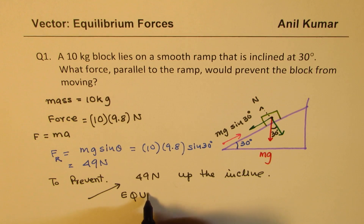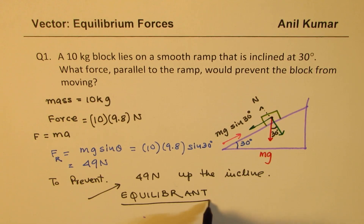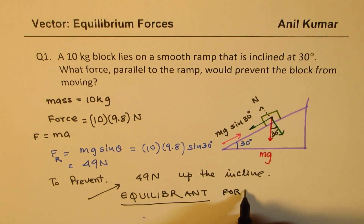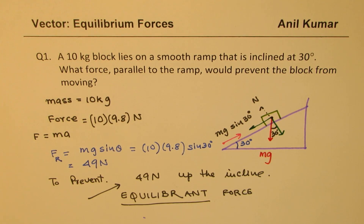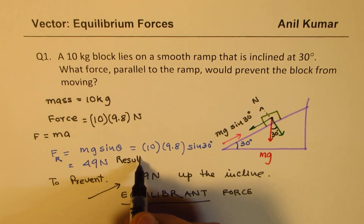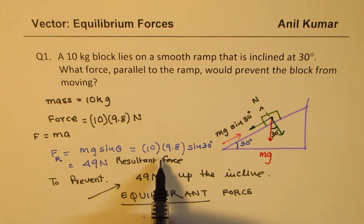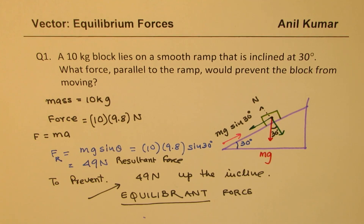This is called the equilibrant force. The equilibrant helps keep objects in equilibrium and always acts in the opposite direction to the resultant force. What we calculated was the resultant force, and directly opposite to it is the equilibrant. Now in the second question, let's see how to do this in three dimensions.